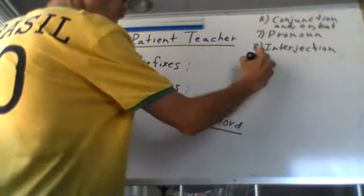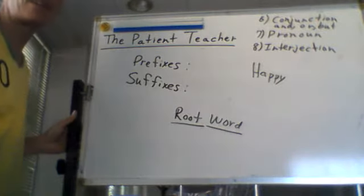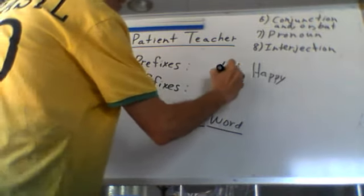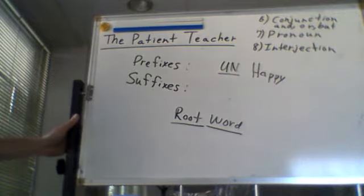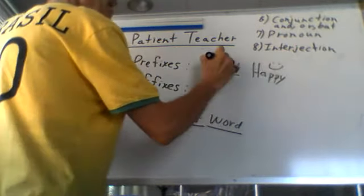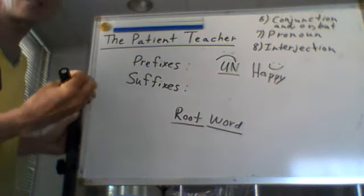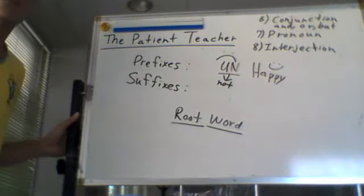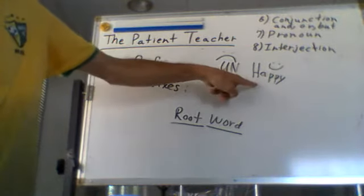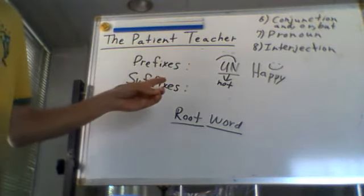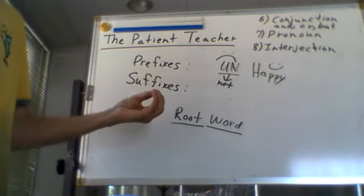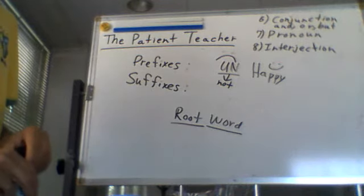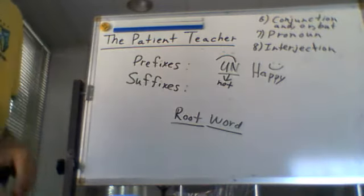If we had the root word 'happy,' for example, and we use the prefix in front of it — 'un' — we get 'unhappy.' So if you think of happy being like this and unhappy like that, you could recognize pretty quickly that 'un' means 'not.' I am unhappy. I am not happy. You can go find all the prefixes and suffixes and recognize what they mean, so that if you see a new word, you know what it means.